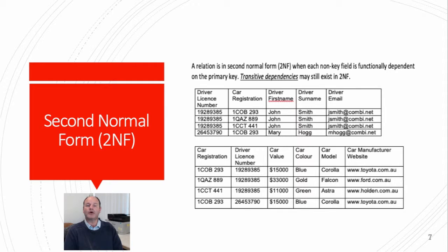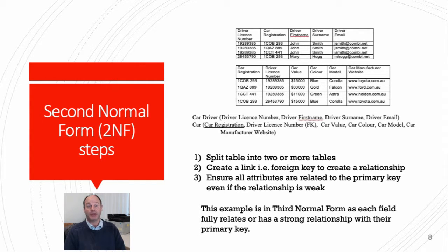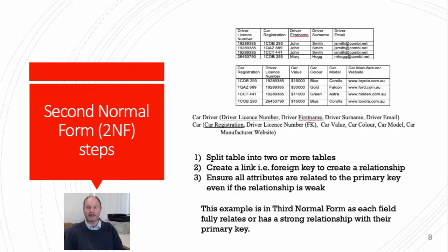Underneath this rule is the result of what a relation will look like in second normal form. We could split the large table quite easily into two tables. The first relation, containing the driver license number, has attributes which are connected fully to that primary key. The second table has the car registration as the primary key and its attributes fully connected to it. The tables are linked as the driver license number is the foreign key. When we look at entity relationship diagrams, we'll discuss in which relation a foreign key should be placed and why.